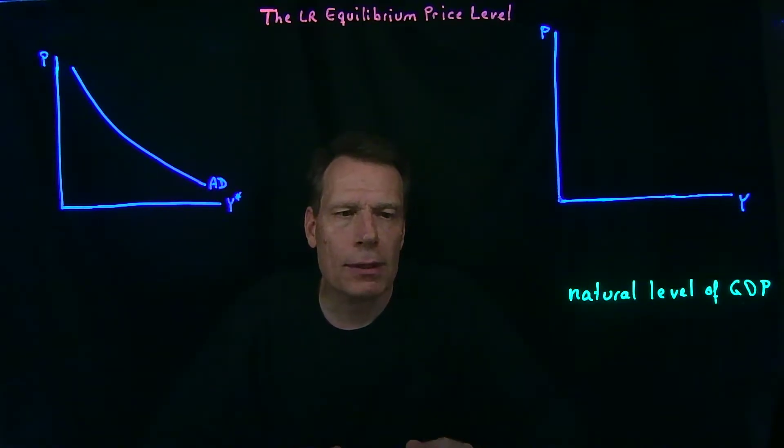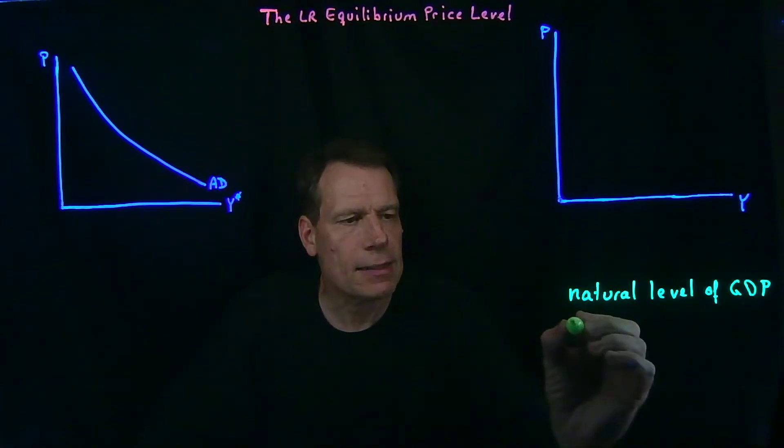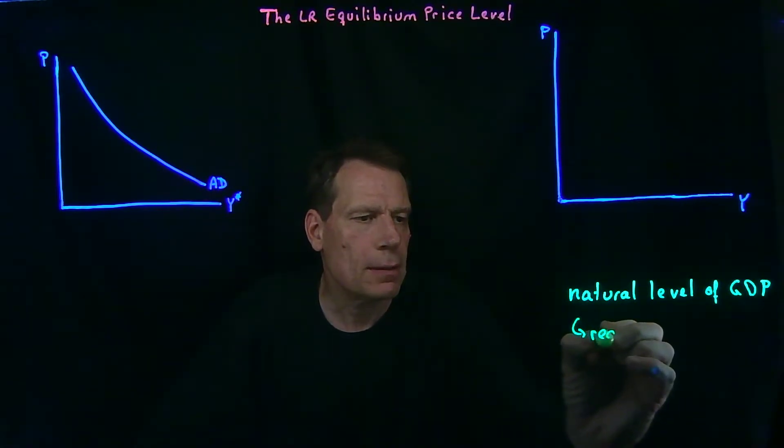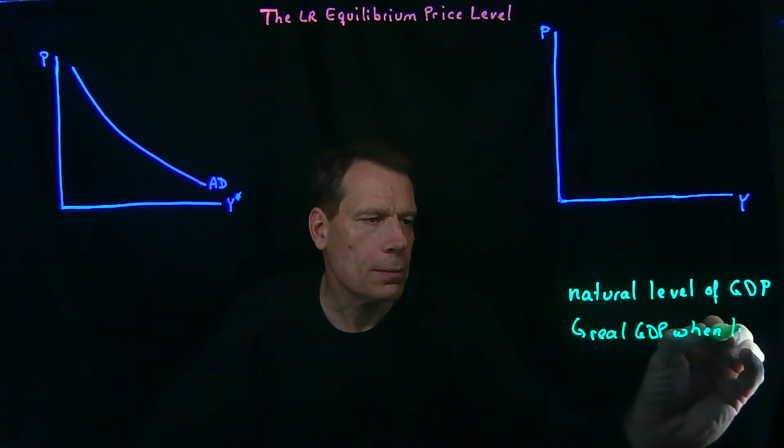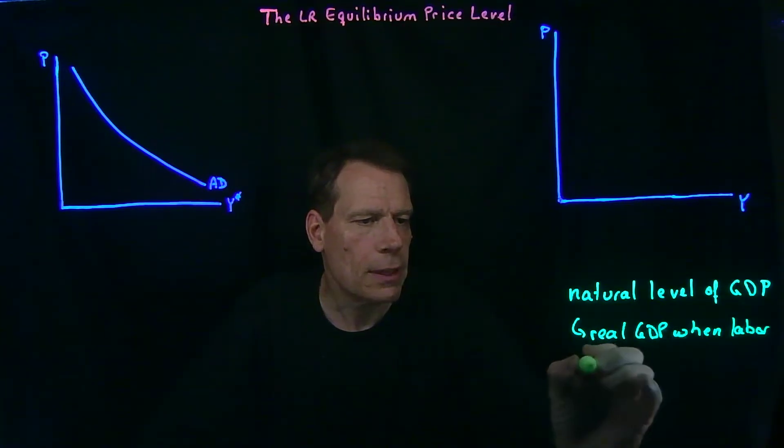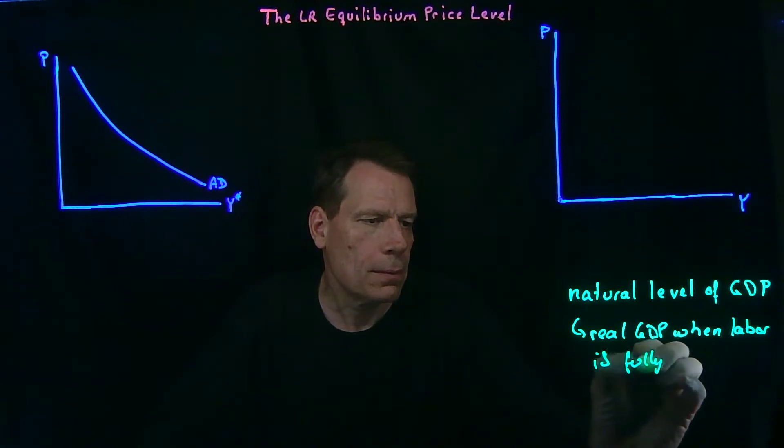Now there's an idea in macroeconomics called the natural level of GDP, and it's defined as real GDP when labor is fully employed.